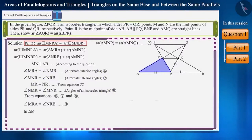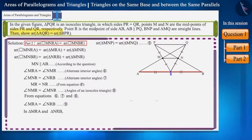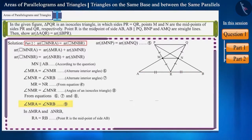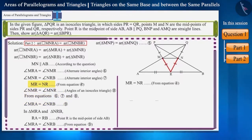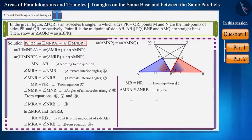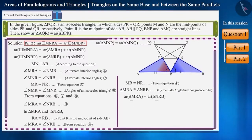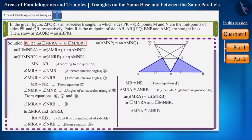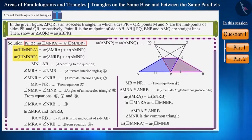Now look at triangles MRA and NRB. It's given that point R is the midpoint of side AB. Therefore, side RA and side RB are equal. We saw that angle MRA and angle NRB are equal, and sides MR and NR are also equal. Therefore, triangles MRA and NRB are congruent by the side-angle-side congruence rule, and the area of congruent triangles is equal. In these two quadrilaterals, the area of these two triangles is equal, and triangle MNR is common. Therefore, we can say that the areas of the two quadrilaterals MNRA and MNBR are equal.